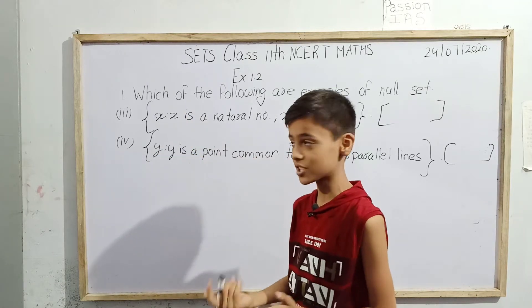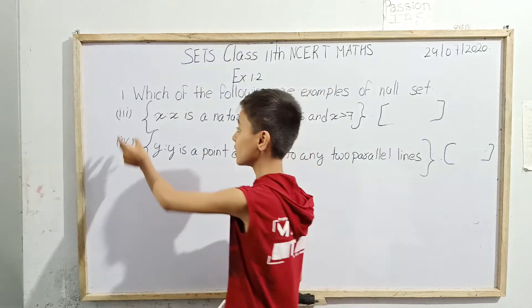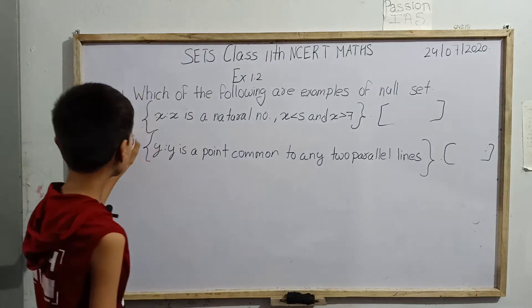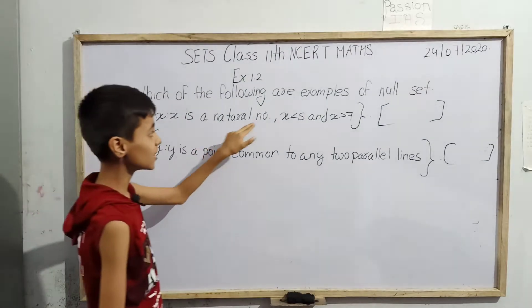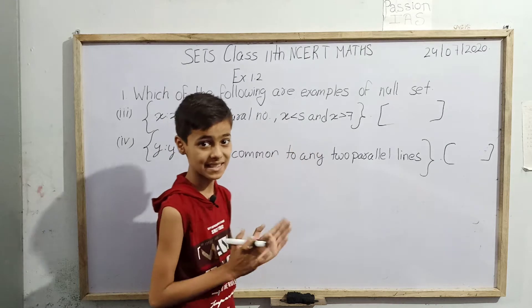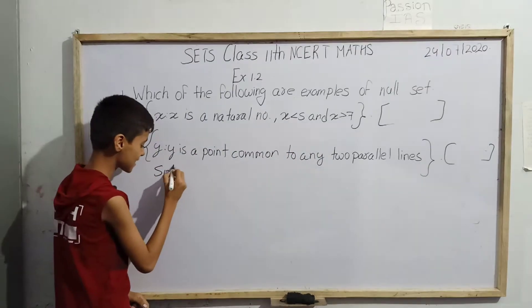After this, the last question will be question number 2. We have third and fourth. The third is asking us: x such that x is a natural number, x is less than 5 and x is greater than 7. Now our solution starts.